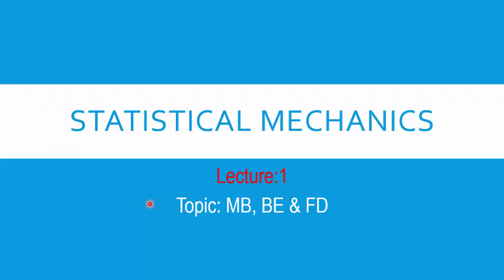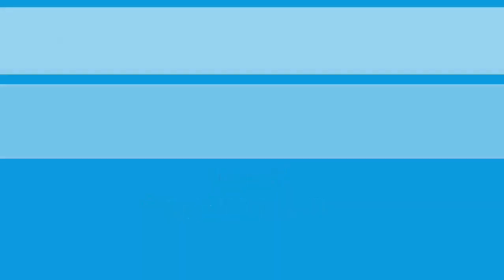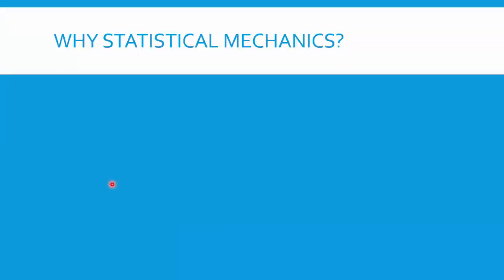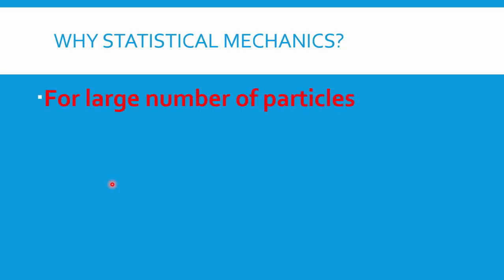This is the first lecture of statistical mechanics, covering the comparison study between Maxwell-Boltzmann, Bose-Einstein, and Fermi-Dirac statistics. The first question is: why do we need to study statistical mechanics? Mechanics tells us about a particle's position, momentum, velocity, and acceleration. In physics there are many branches — Newtonian mechanics, classical mechanics, quantum mechanics. When you classify particles into macro and micro particles and have a large number of them, we rely on statistical mechanics.